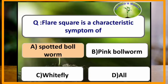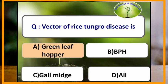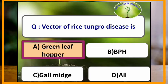Flared square is a characteristic symptom of attack of which pest? Flared square is a characteristic symptom of attack of spotted bollworm. Vector of rice tungro disease is green leafhopper.